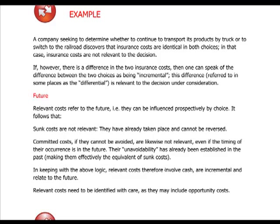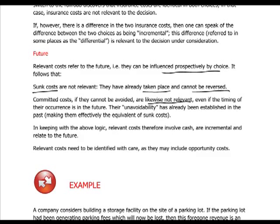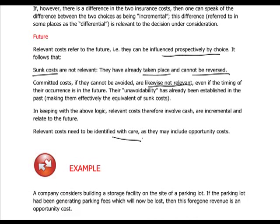Relevant costs need to be future costs because we can influence them by our choice. Some costs have already taken place and cannot be reversed. Committed costs, and costs that cannot be avoided, are likewise not relevant because whether we take the decision or not they will be the same — for example, a lease contract that cannot be cancelled is not relevant to a decision about closing down a factory.